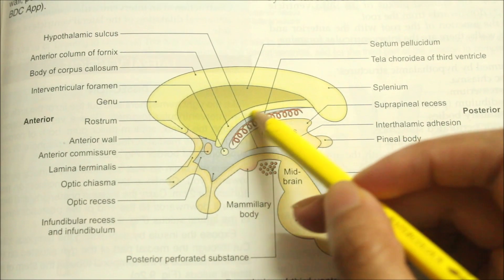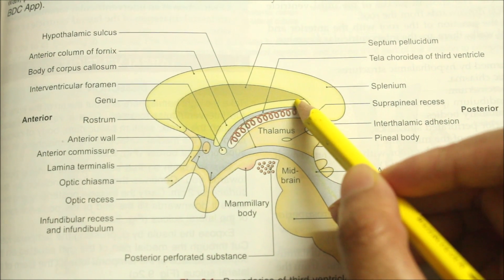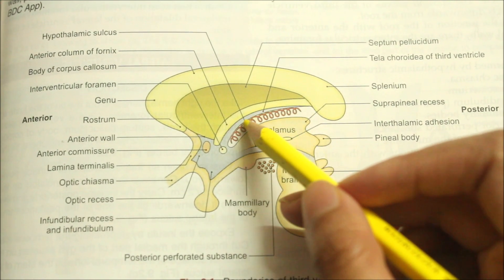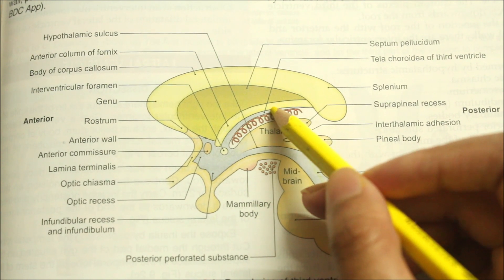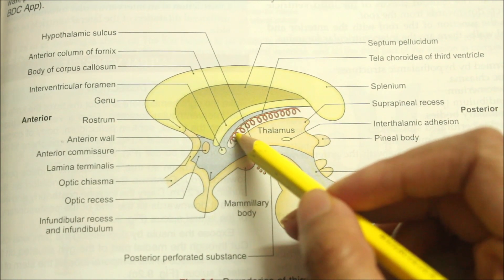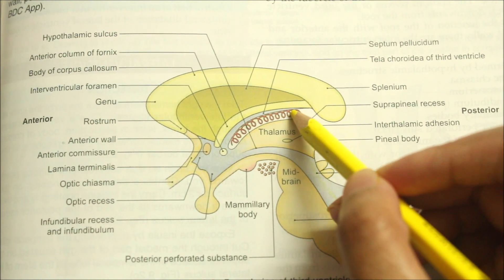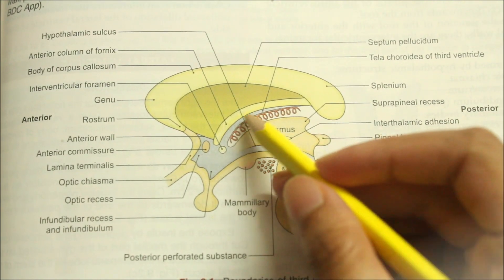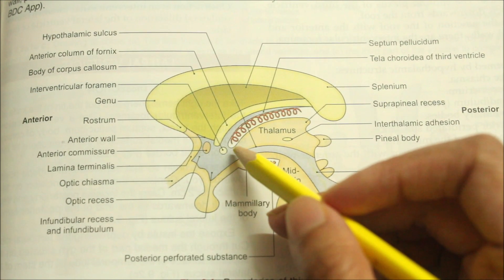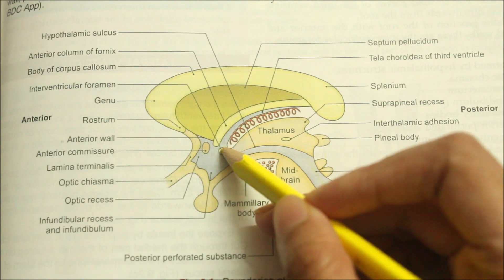Now looking at the roof of the third ventricle, it is formed by the body of the fornix and the ependyma lining the undersurface of the tela choroidea of the third ventricle. It is also formed by the choroid plexus of the third ventricle, which projects downwards from the roof. At the junction of the roof with the anterior and lateral walls, there is the interventricular foramen.